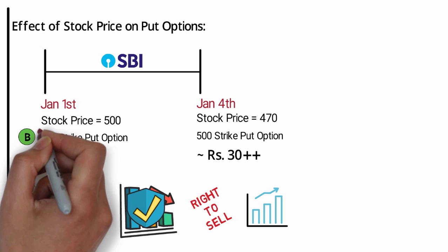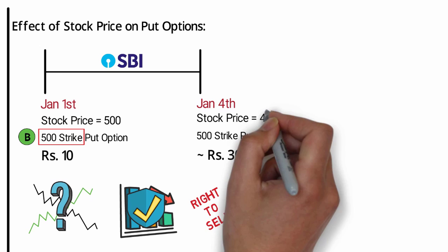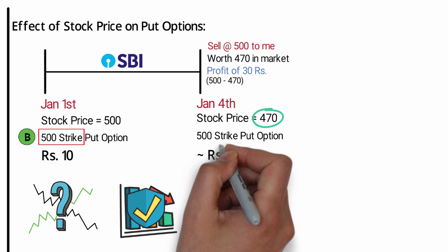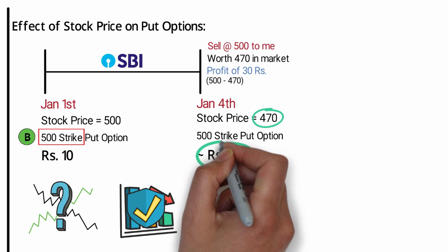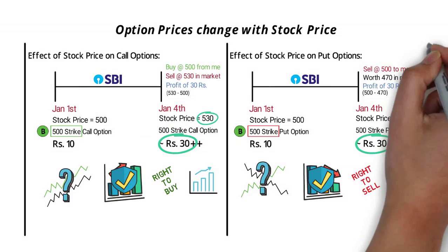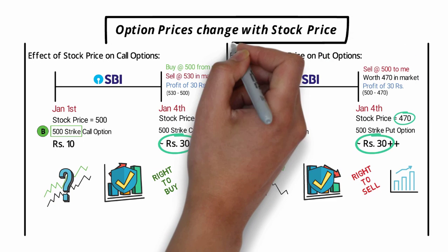But why does this happen? The put option gives you the right to sell the stock at the strike price. If the price of SBI stays at 470, it gives you the right to sell SBI at 500 to me. So you can sell something worth 470 to me immediately at 500, making a 30 rupee profit — which makes the option worth at least 30 rupees. Now you have a fair idea how call and put option prices change with respect to stock price movement.